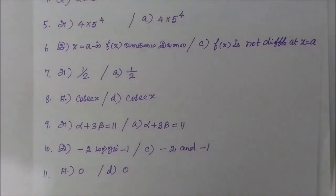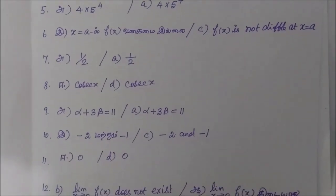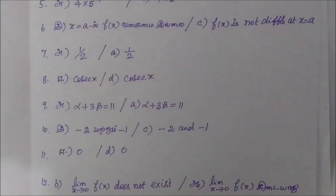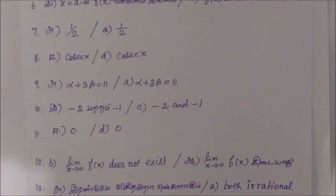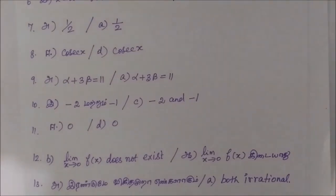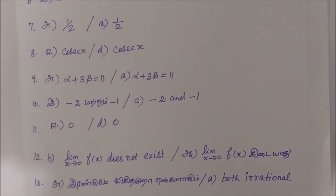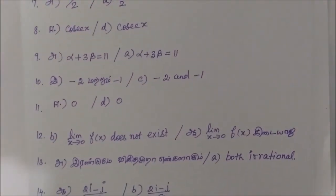Then for question number 10: option C, minus 2 and minus 1. Then for question number 11: option D, 0. Question number 12: option A, limit x tends to 0, f of x does not exist.